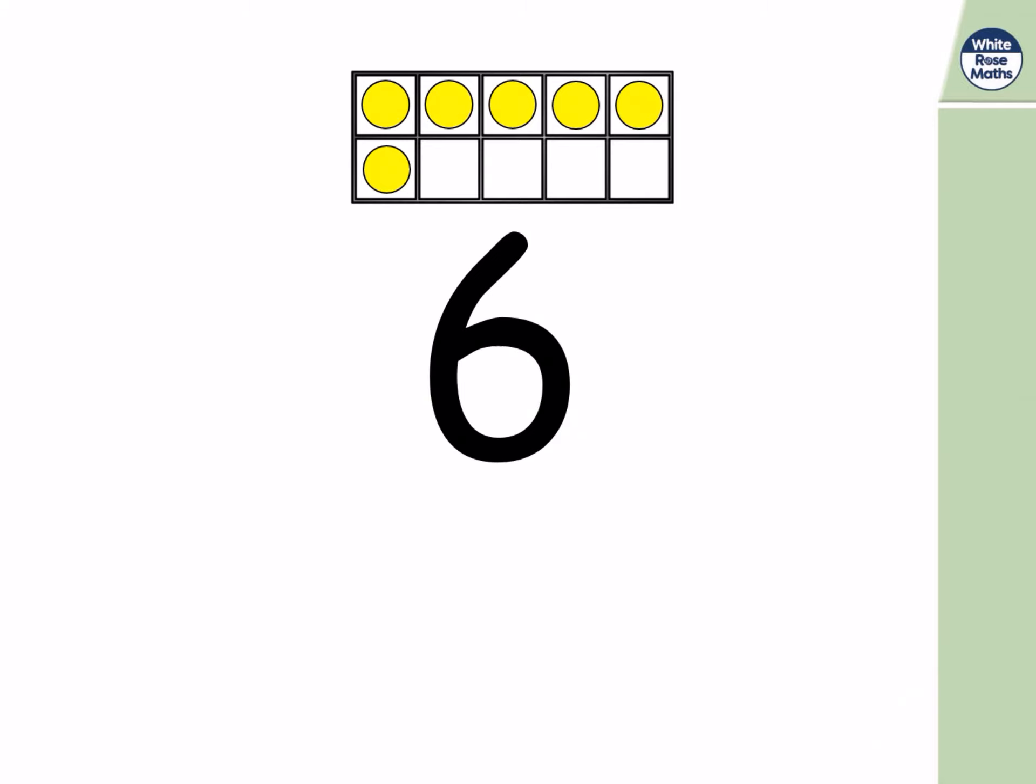I'm going to show you a number and a ten frame on the screen. And I'd like you to call out the bond to ten. So six and something makes ten. One of the ways you can do this is to look at the gaps on the ten frame. So for this one, six and four is equal to ten. Are you ready for the next one?